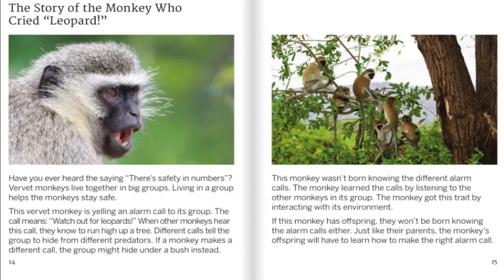The story of the monkey who cried Leopard. Have you ever heard the saying, there's safety in numbers? Vervet monkeys live together in big groups. Living in a group helps the monkey stay safe. This vervet monkey is yelling an alarm call to its group — the call means watch out for leopards. When other monkeys hear this call, they know to run high up in a tree. Different calls tell the group to hide from different predators. If a monkey makes a different call, the group might hide under a bush instead. This monkey wasn't born knowing the different alarm calls; the monkey learned the calls by listening to the other monkeys in its group. The monkey got this trait by interacting with its environment.